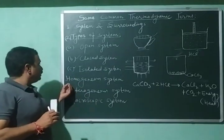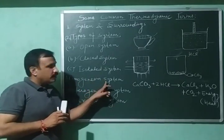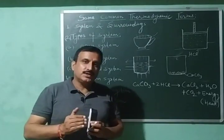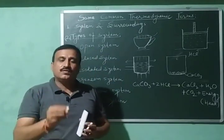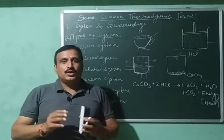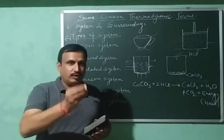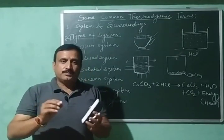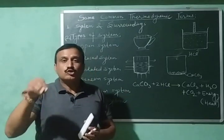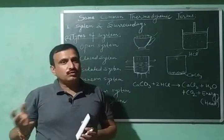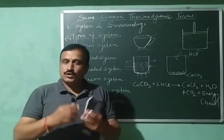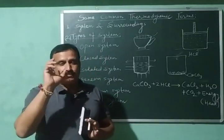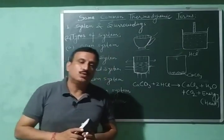Another type is the homogeneous system. A system is said to be homogeneous if it is uniform throughout, consisting of a single phase. For example, a pure liquid or pure solid with only one phase, or a mixture of two completely miscible liquids. Another example is a solid completely soluble in water — when we dissolve salt or sugar in water, the system is homogeneous because it consists of only one phase, the liquid phase. Such a system is called a homogeneous system.